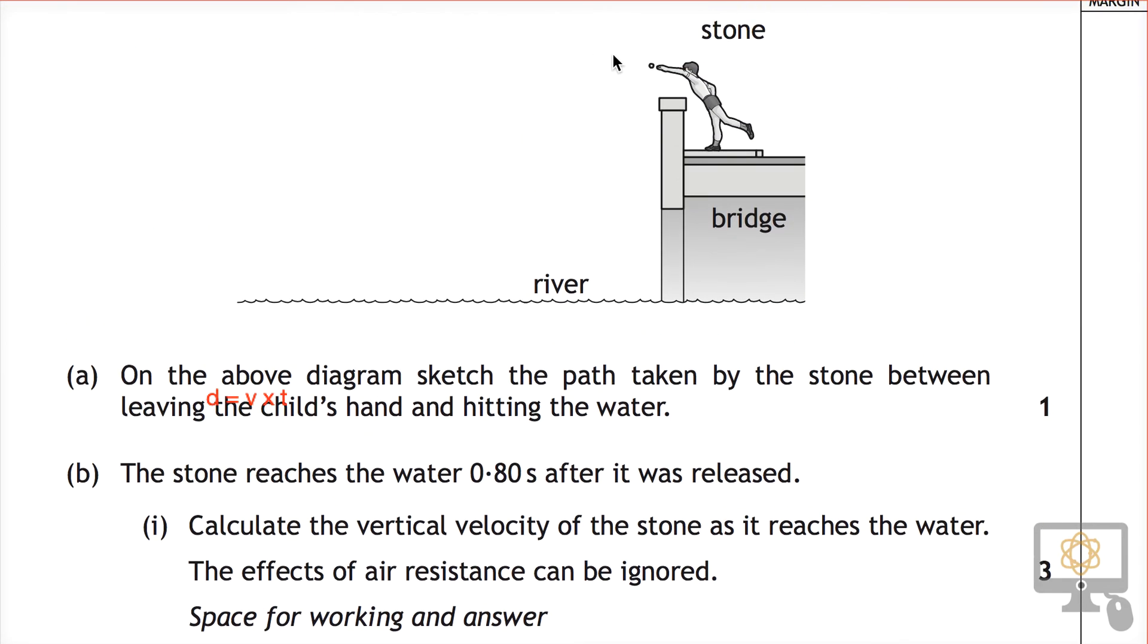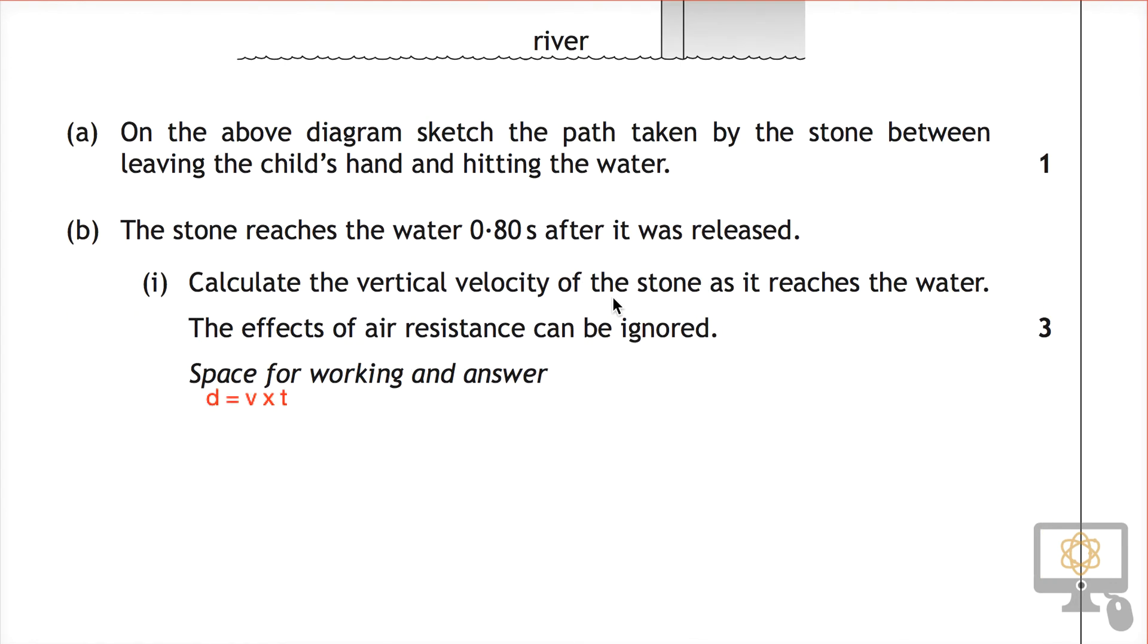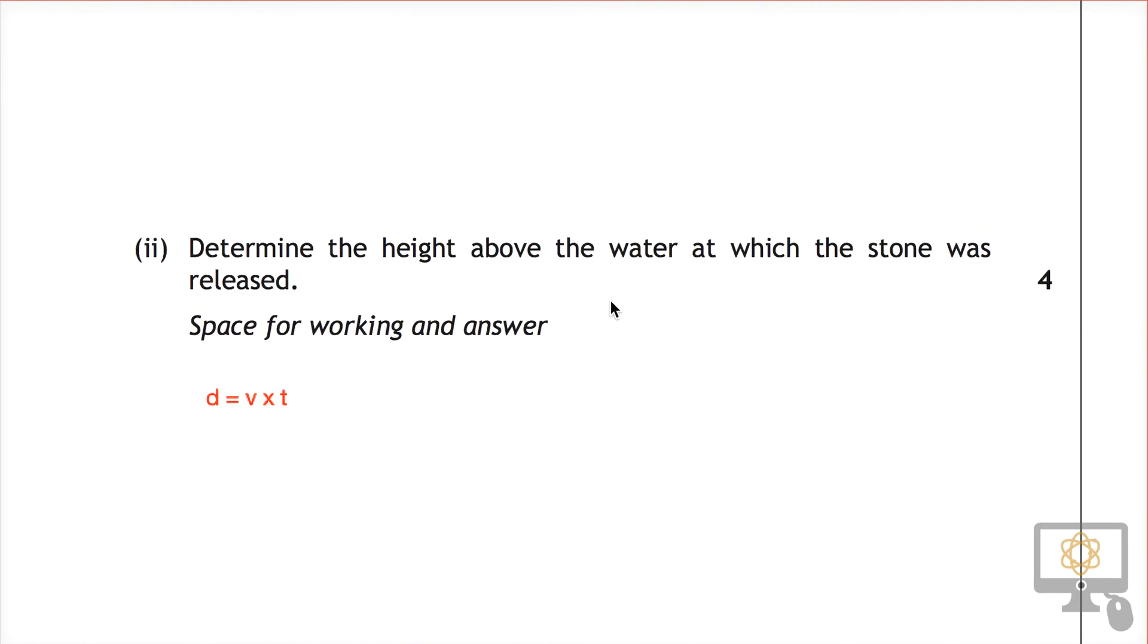It starts out at zero and it ends out at 7.8 meters per second. So this speed that we're thinking about right here is not actually an instantaneous speed, but it's in fact the average speed. So technically, we should really put a little bar above this v to give the equation average speed multiplied by time.